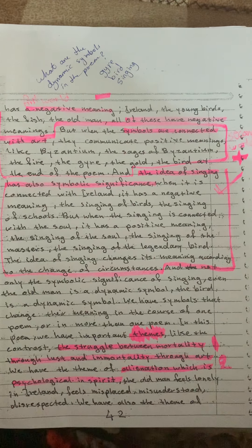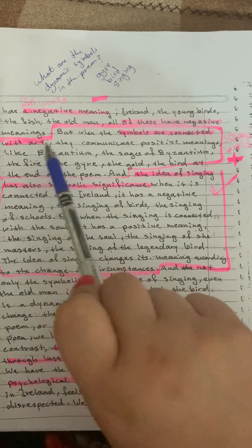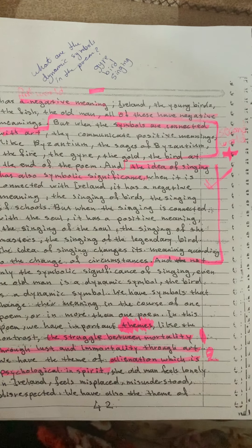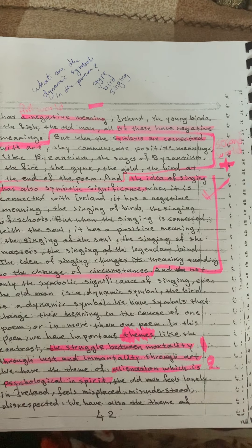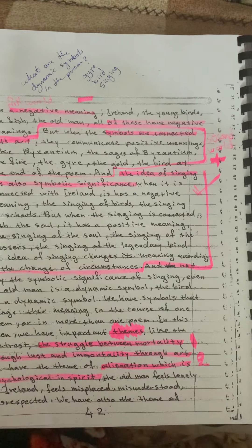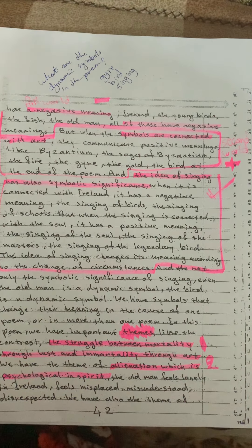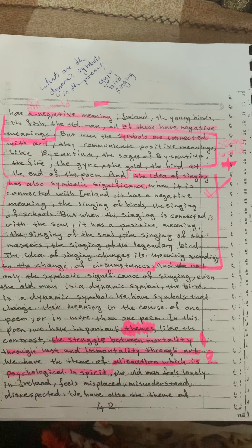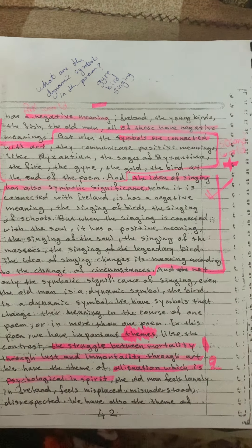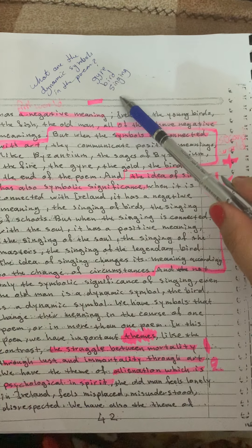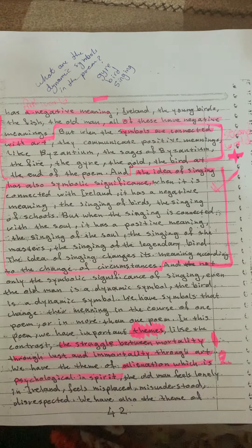The positive symbols in the poem are everything connected to art. Symbols like Byzantium, the sages, the gyre, the golden bird — all have a positive meaning. If asked about dynamic symbols, you can list the gyre, the bird, and the singing itself, as these are the most dynamic and give motion to the poem.